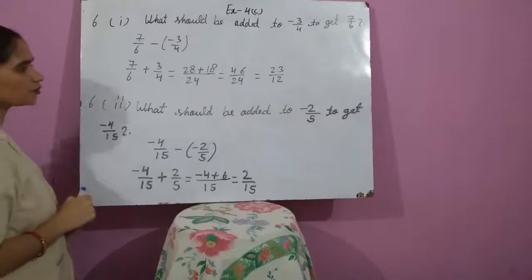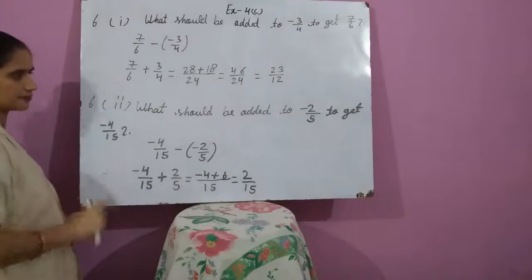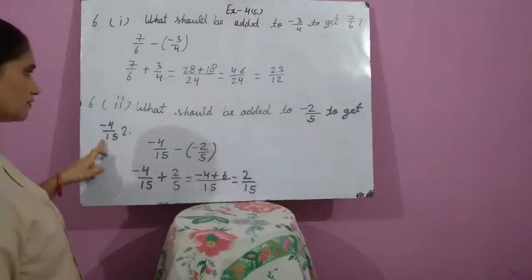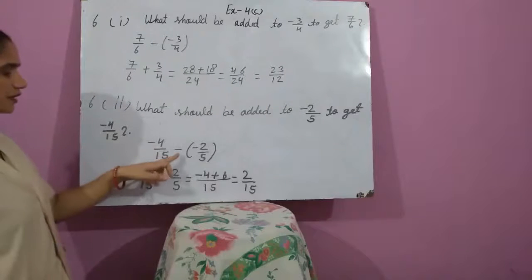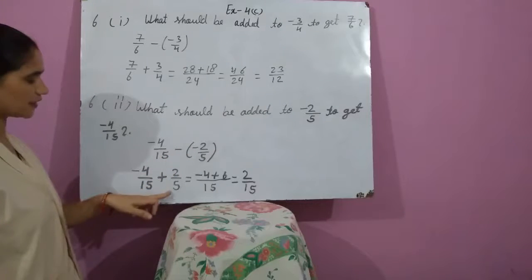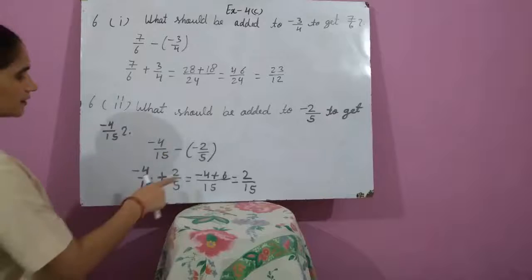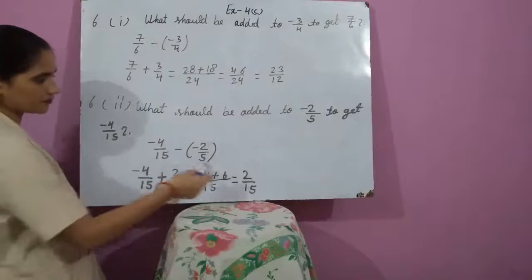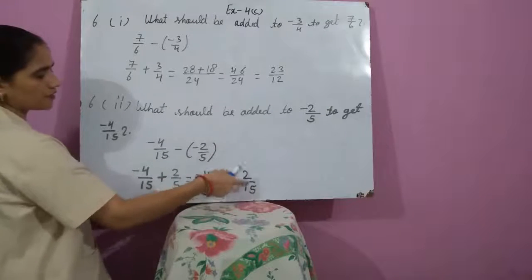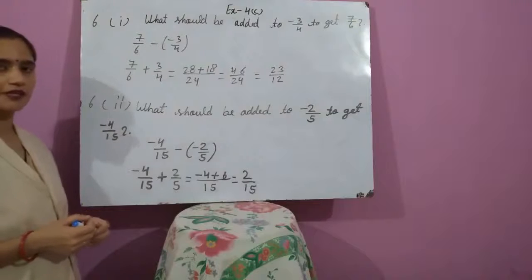Second part: What should be added to minus 2 upon 5 to get minus 4 upon 15? We subtract minus 2 upon 5 from minus 4 upon 15. So: minus 4 upon 15 minus (minus 2 upon 5); minus minus becomes plus. The LCM of 15 and 5 is 15. After the calculation we get minus 4 plus 6, which gives 2 upon 15. This is the required rational number. Try the remaining parts yourself, and thank you.